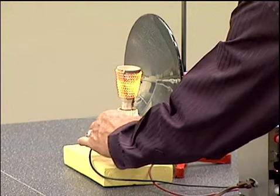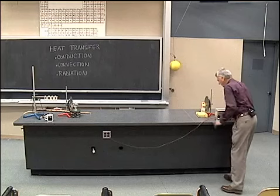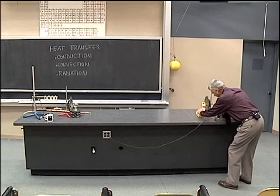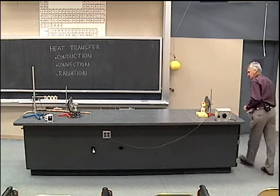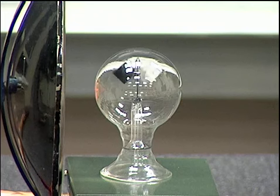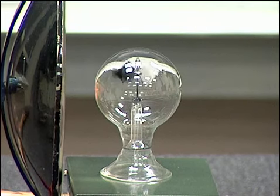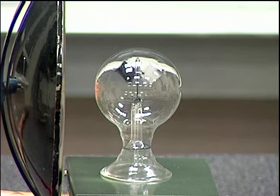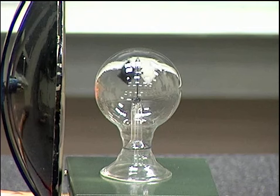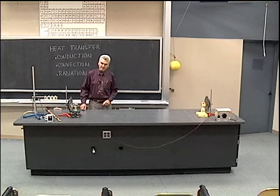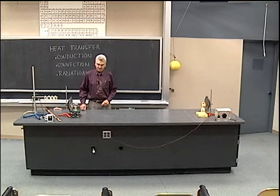I'm going to set that at a pre-marked place there at the focal point of the mirror, and we see now that radiometer is indeed spinning around. And we see it spins in response to the radiant energy that it's receiving from the heating element, thereby demonstrating heat transfer by radiation.